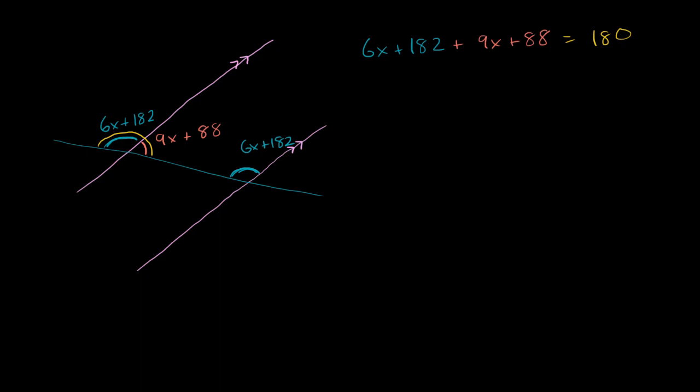And now we just have to simplify this thing. So 6x plus 9x is going to give us 15x. And then we have 182 plus 88. Let's see, 182 plus 8 would get us to 190, and then we add another 80, gets us to 270. Plus 270 is equal to 180.